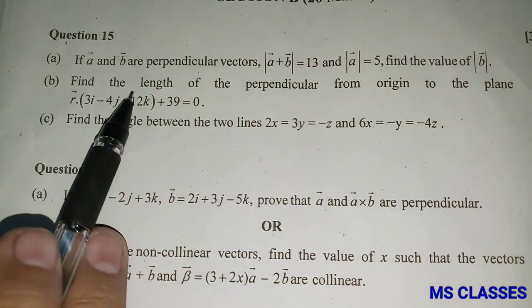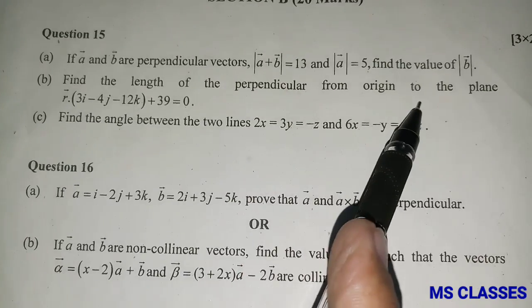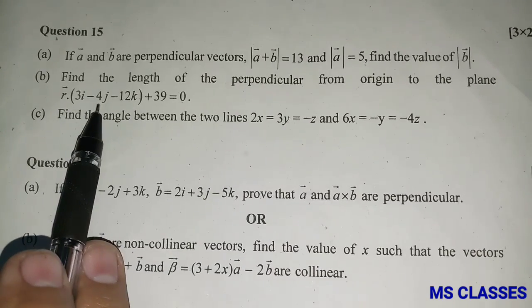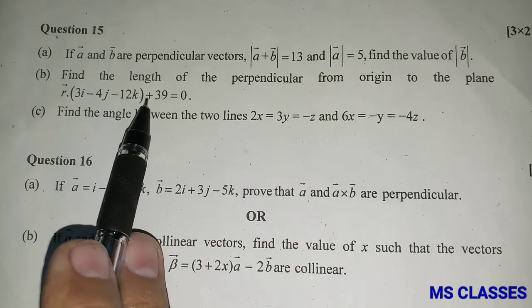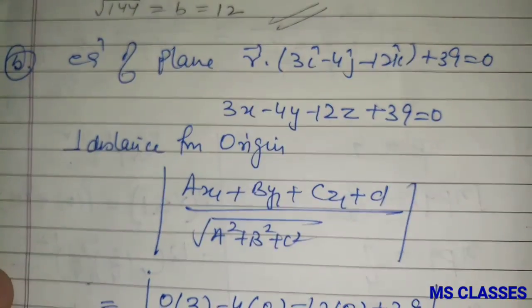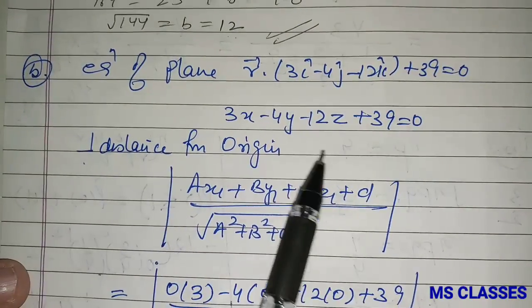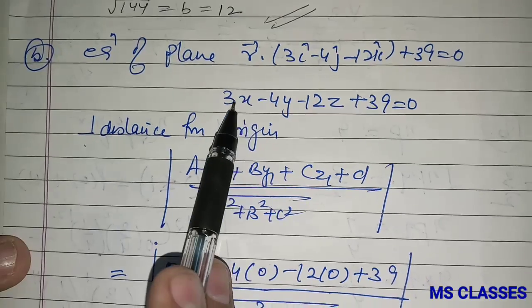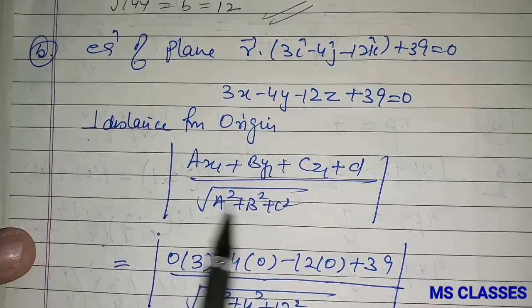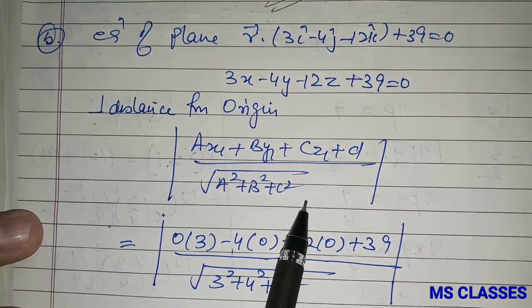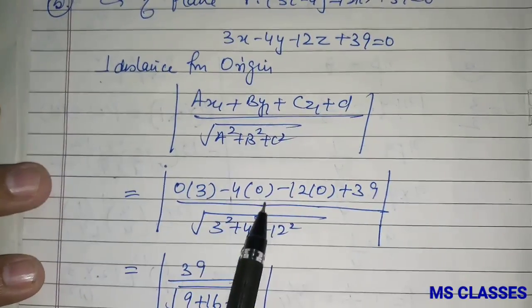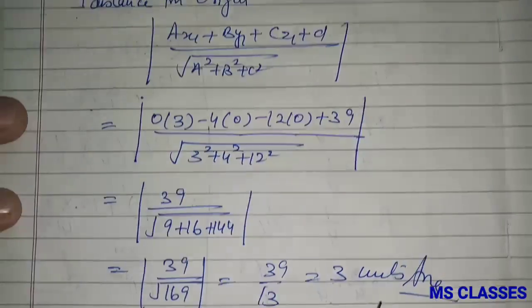Find the length of the perpendicular from the origin to the plane r⃗·(3î - 4ĵ - 12k̂) + 39 = 0. Writing in Cartesian form: 3x - 4y - 12z + 39 = 0. Using the point-to-plane distance formula with (x₁, y₁, z₁) = (0, 0, 0), the perpendicular length = 39/√(9 + 16 + 144) = 39/13 = 3 units.